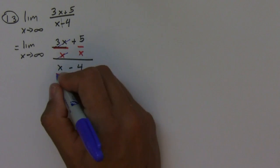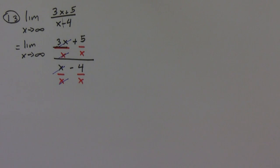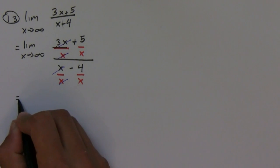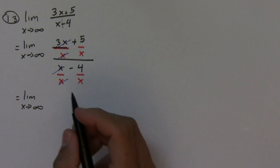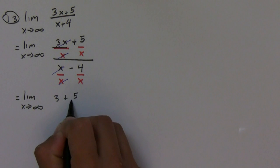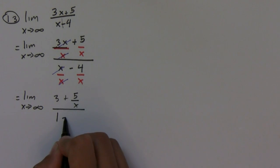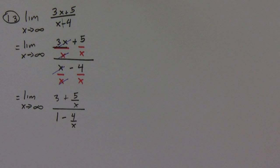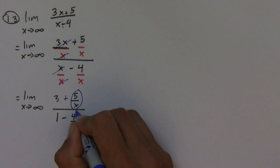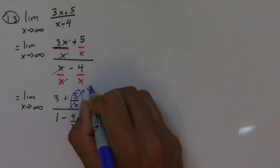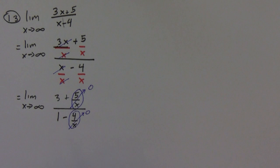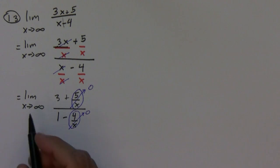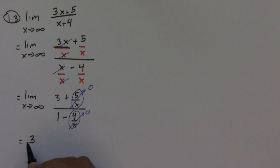The x's cancel, and so what I'm left with is the limit as x goes to infinity of (3 + 5/x) over (1 - 4/x). As x goes to infinity, 5/x goes to zero and 4/x also goes to zero because they're getting smaller and smaller. So the only thing left is 3 over 1, which equals 3.